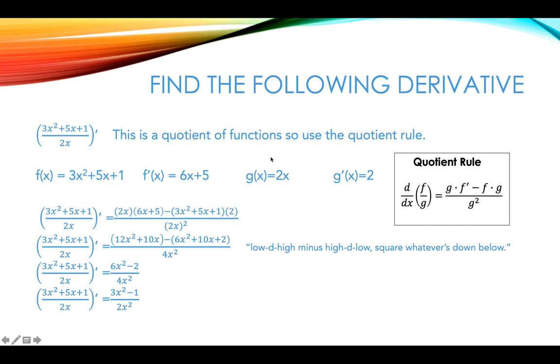So we're going to do low, 2x, d high, f prime, minus high, 3x squared plus 5x plus 1, d low, 2, then we're going to square whatever is down below, so 2x quantity squared.